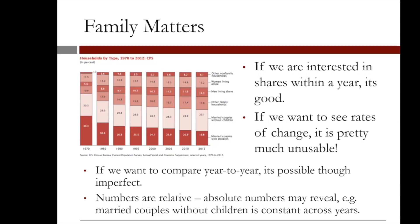The key problem is that the x-axis is completely off. The gap between the first two columns is 10 years, but the gap between the last two columns is only 2 years, meaning that the rates are hard to read from this. If we are not interested in the rates of change but just want to compare two years at a time, it's not bad, but it's not easy either. Try comparing 1970 married without children to 2010 married without children without looking at the numbers — can you tell if it has grown or shrunk?